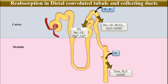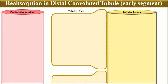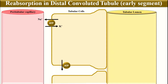Let's discuss in detail tubular reabsorption in the early parts of the distal convoluted tubule. We have a tubular cell with a tubular lumen, interstitium, and peritubular capillary. As with all tubular cells, the sodium-potassium ATPase pump is located on the basal and lateral membrane, reabsorbing 3 sodium out of the tubular cell and secreting 2 potassium inside. Due to this reabsorption, a chemical gradient is created that drives reabsorption of sodium from the apical membrane via the sodium-chloride co-transporter.